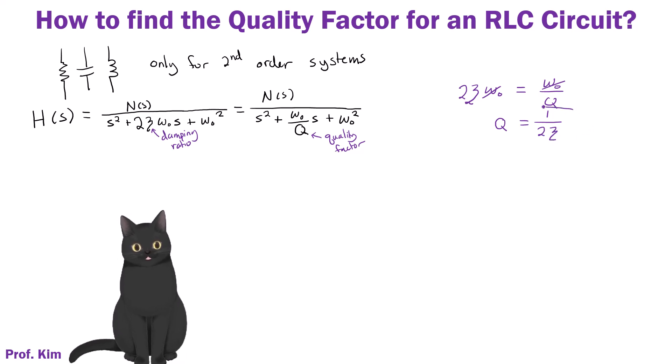All right, so this is a relationship that you can just kind of remember. So damping factor, I think, is a little bit easier to understand. It's like how much is the system damped? So it's like reducing the, attenuating the system. And then the quality factor is the inverse of that. So a higher quality actually means it's going to be less damped. All right, so that's one relationship that you can remember right there.